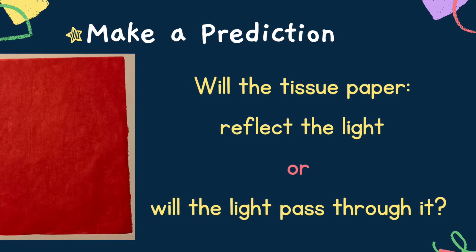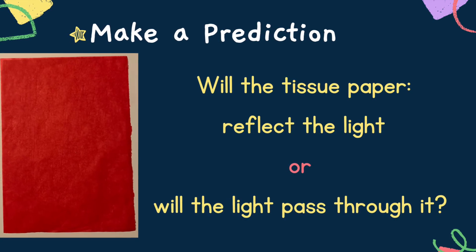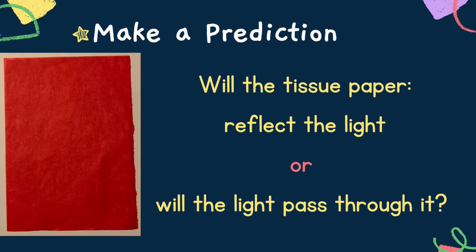Now I would like you to make a prediction about the tissue paper. Do you think that the tissue paper will reflect the light, or will the light pass through it? What's your prediction? I'm going to put the tissue paper in front of the light source. Have a look to see what happens — in the background the wall turns red. That means that the light does pass through this tissue paper; the tissue paper does not reflect the light.